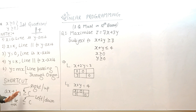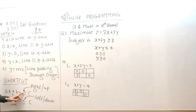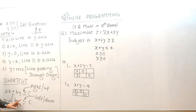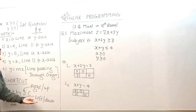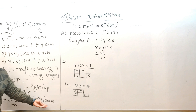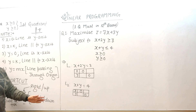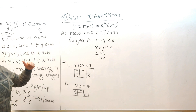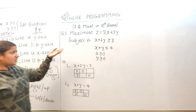If both conditions are fulfilled, the shortcut applies. The rule is: if the sign is greater than (≥), the shaded portion will be on the right side or upward. If the symbol is less than (≤), the shaded portion will be on the left or downward. Now we are going to apply this concept to our question.